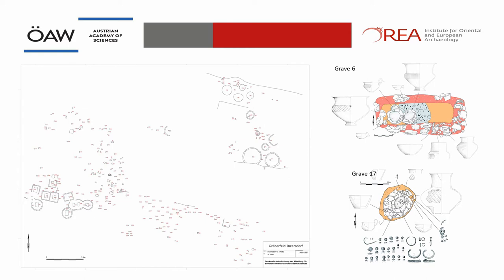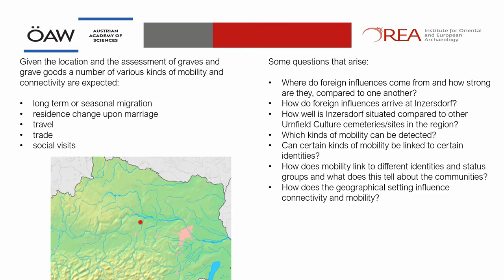Large parts of the center and the rims were removed during gravel extraction, which explains the strange shape of the cemetery, and in the southwestern area it is overlaid by a La Tène period cemetery. The cemetery is situated close to the Treisen-Danube confluence, where the Danube provides a powerful west-east access and the Treisen supplies access to the Alpine foothills with their natural resources. Given that location and the assessment of the grave goods, a number of different kinds of mobility can be expected, like long-term seasonal immigration, residence change upon marriage, travel, trade, or social visits.